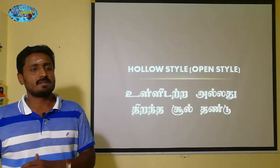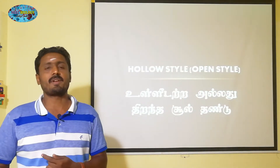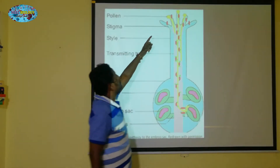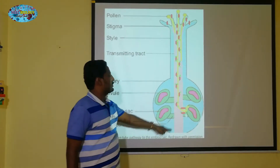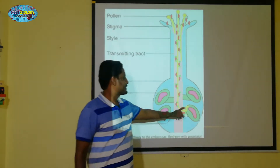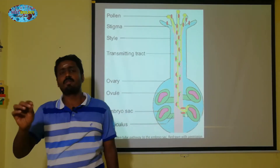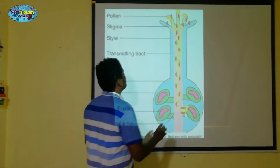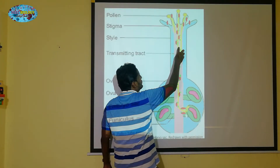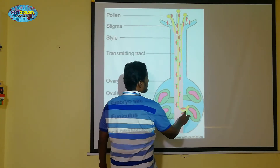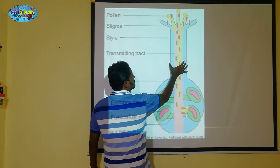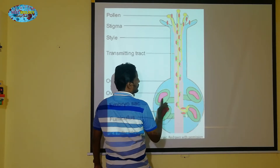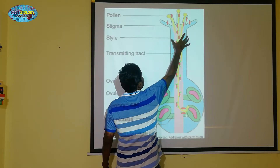Now, you will find a process of fertilization. Normally, there is a stigma. There are pollen grains. The pollen tube is formed straight up. This is a fertilization. The most important process is that the pollen tube is formed from the bottom. This is the stigma, style and ovary.